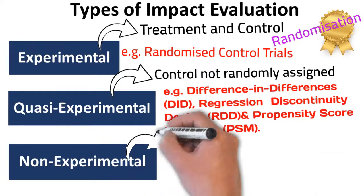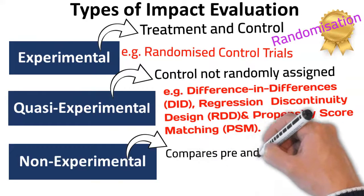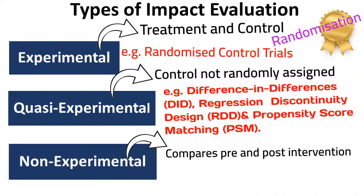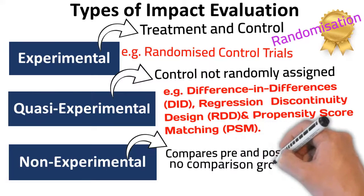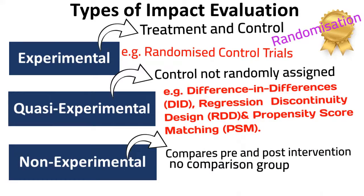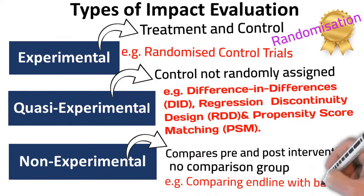Non-experimental impact evaluations use statistical methods to compare outcomes before and after the interventions and to control for other factors that could affect the outcomes. They can be useful when there is no comparison group or when experimental or quasi-experimental designs are not feasible. Non-experimental impact evaluation simply measures the difference between the end line and the baseline without a control group. Case study approaches and post-intervention only approaches can also be used.